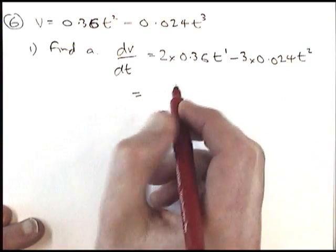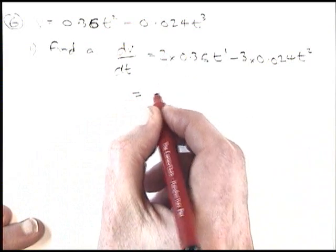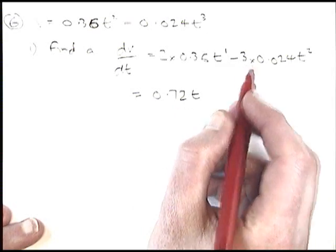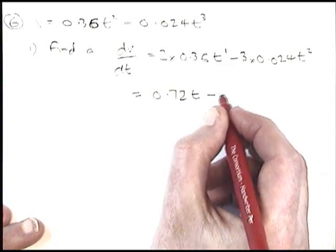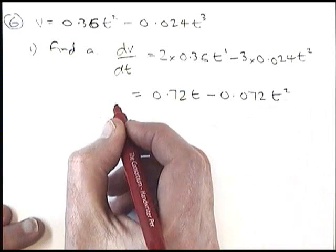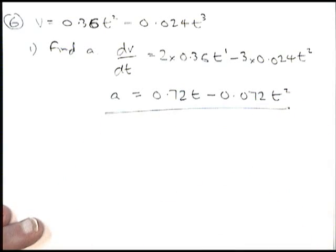We just need to simplify that. 2 lots of 0.36 is 0.72. t to the power of 1 is just t. Over here, if we work that out, it's 0.072 and t squared. That is the expression for the acceleration. That's part 1 complete.